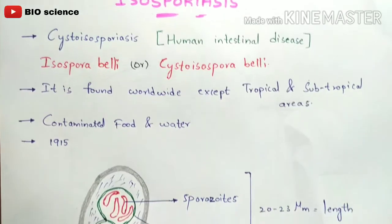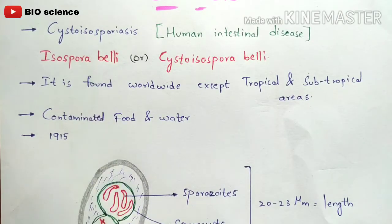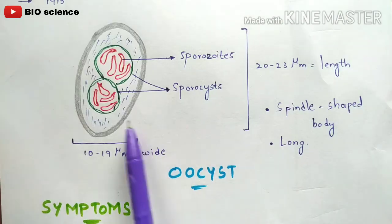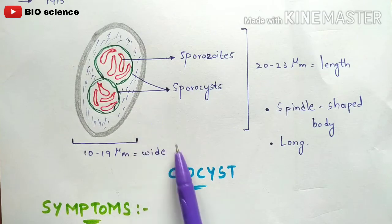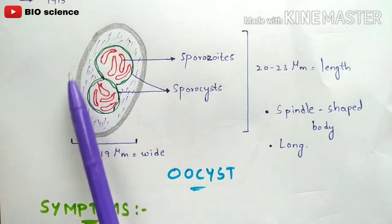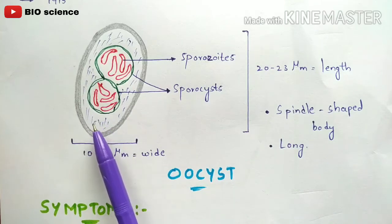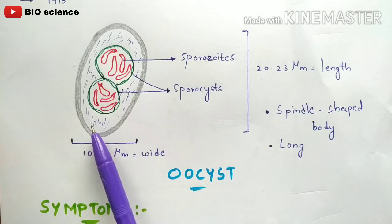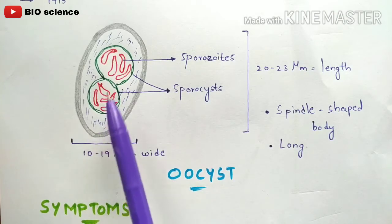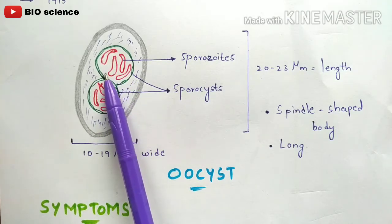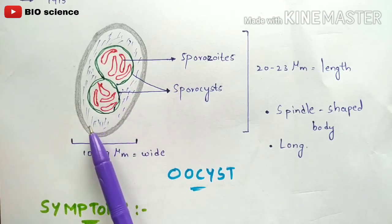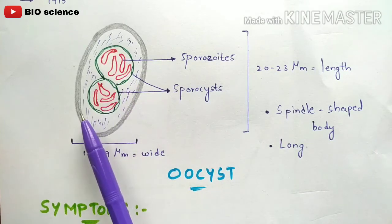Now let us learn about the morphology of Isospora belli. As you can see in the structure here, this is the oocyst of Isospora belli — specifically a mature oocyst. What is the difference between an immature and a mature oocyst? In an immature oocyst, the sporozoites are not completely developed, but in a mature oocyst the sporozoites are completely developed.